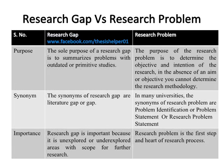The sole purpose of a research gap is to summarize problems with outdated or primitive studies, while the purpose of the research problem is to determine the objective and intention of the research. In the absence of an aim or objective, you cannot determine the research methodology.